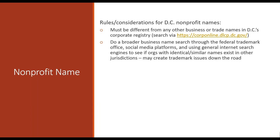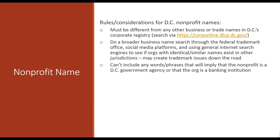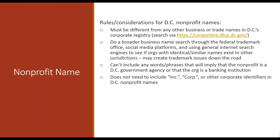Do as broad a search as possible to see if anyone might be conflicting in their use of the same name. A DC rule is that you can't include words or phrases that imply your nonprofit is a DC government agency, and you can't have words like 'trust' or 'bank' that could confuse people into thinking you're a banking institution. Unlike some states, DC does not require you to include 'incorporated,' 'corp,' 'LLC,' or any other corporate identifiers in your legal name.